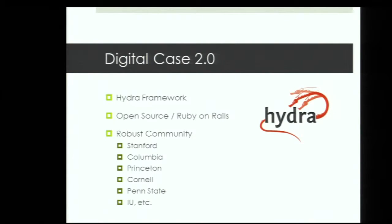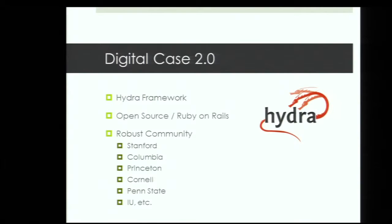With the changes in DigitalCase 2.0, we're still using the upgraded Fedora framework, but we're applying the Hydra framework around it. Fedora is really just a management application, but Hydra gives you the user interface experience. It's an open source platform based on Ruby on Rails. By participating with Hydra, we get to be part of a robust community — people like Stanford, who was one of the original developers, along with Columbia, Princeton, Cornell, Penn State, and IU — all working on institutional repositories together.